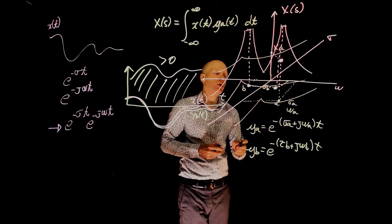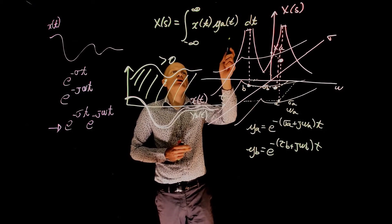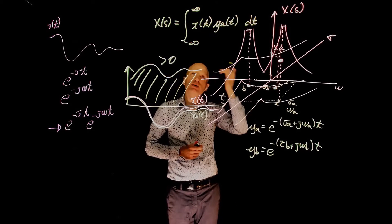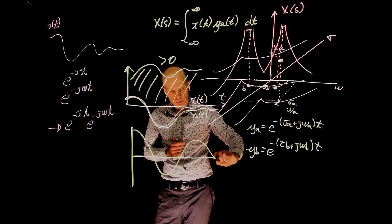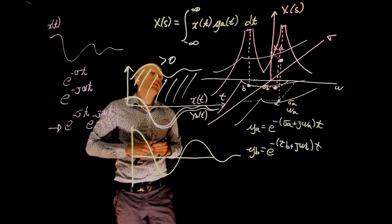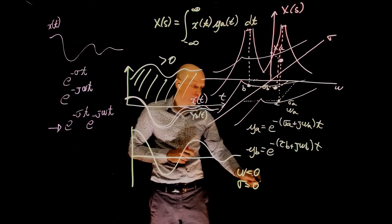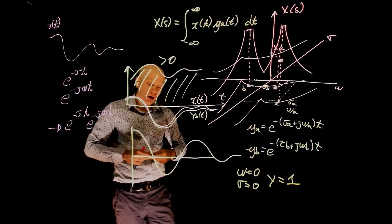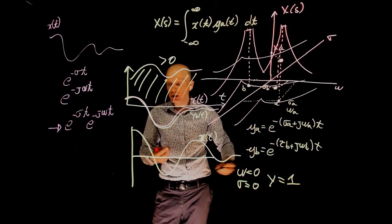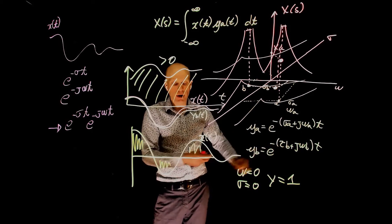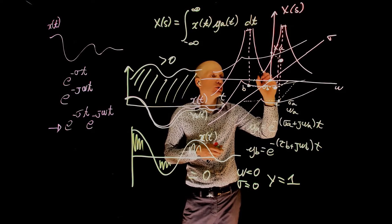Another specific point to pay close attention to is when this function tends to zero. There are specific combinations of sigma and omega that lead to zero in the integration. For instance, when x of t is a sinusoidal or exponentially decaying waveform and we assign omega equals zero and sigma equals zero, then y of t is simply one. Taking the integral of x of t times one gives areas that cancel out, resulting in zero. So at that point, the function tends to zero.